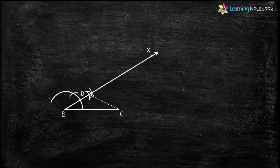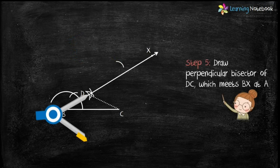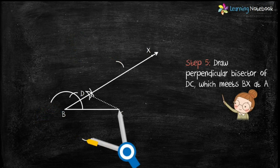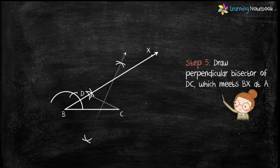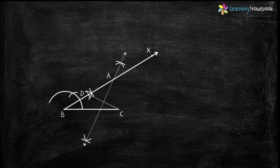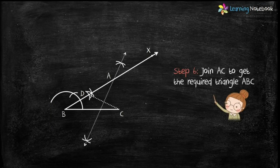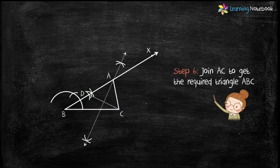In Step 5, draw the perpendicular bisector of DC, which meets ray BX at point A. You may refer to Part 2 of this chapter to learn the step-by-step construction of a perpendicular bisector. Now in the last step, join AC to get the required triangle ABC.